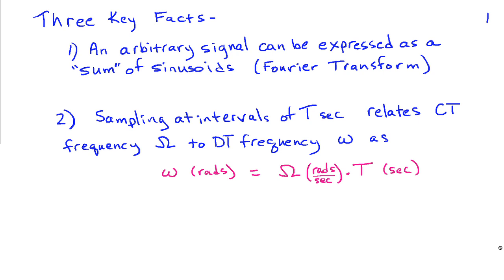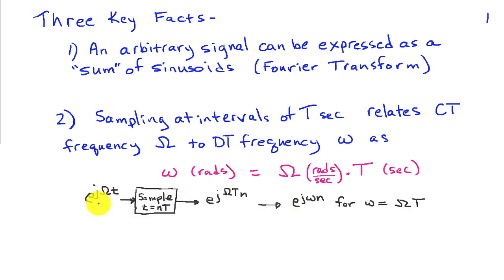The second fact is that when we sample a continuous time sinusoid at intervals of T seconds, we get a relationship between continuous time frequency uppercase Ω and discrete time frequency lowercase ω. Discrete time frequency ω in radians equals continuous time frequency Ω times the sampling interval T. So if I take e^(jΩt) and sample it at intervals of nT seconds, I get e^(jΩTn), which corresponds to a discrete time sinusoid e^(jωn), confirming that ω = ΩT.